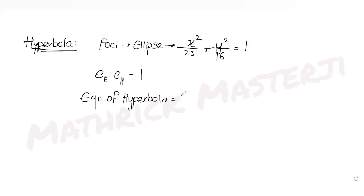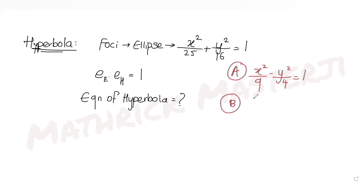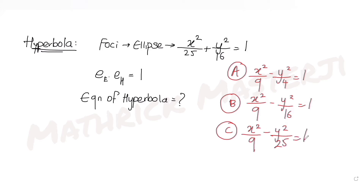The answer choices are: (A) x²/9 − y²/4 = 1, (B) x²/9 − y²/16 = 1, (C) x²/9 − y²/25 = 1, and (D) x² − y² = 9. We need to figure out which one matches the equation of the hyperbola.